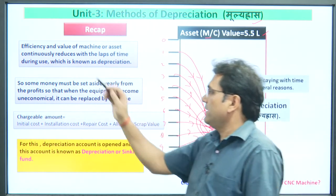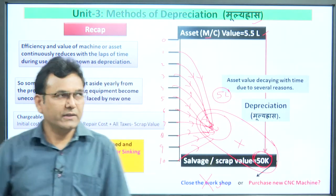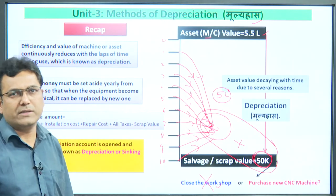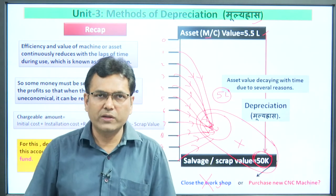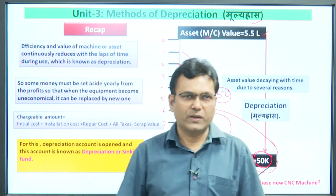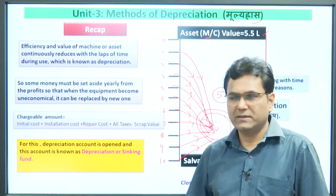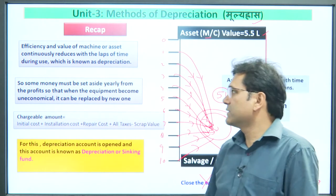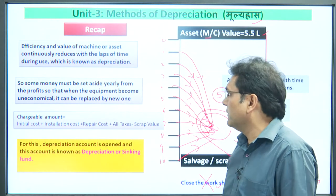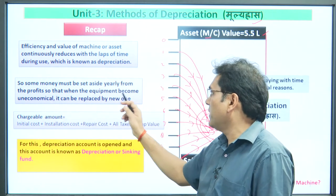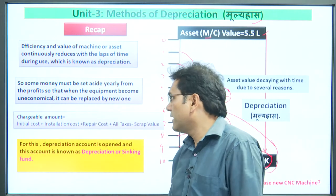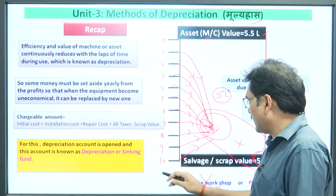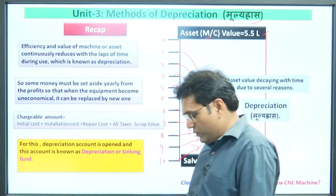Revising the definition: the efficiency and value of a machine or asset continuously reduces with the lapse of time during use, which is known as depreciation. Therefore, some money must be set aside yearly from the profits so that when the equipment becomes uneconomical, it can be replaced by a new one.